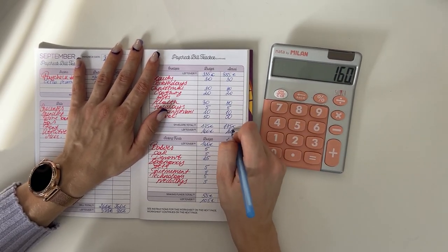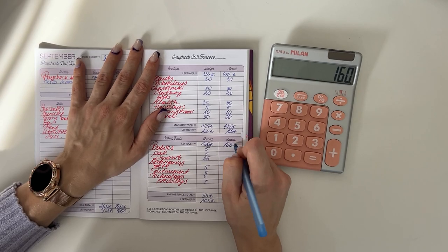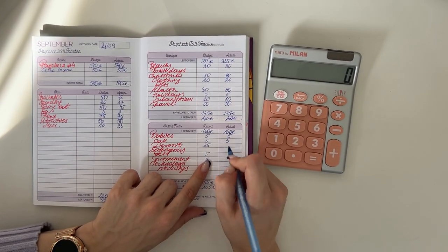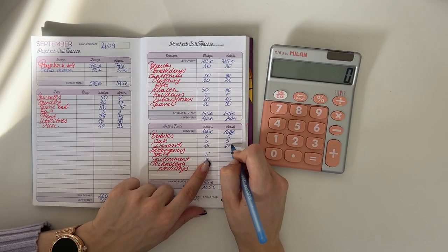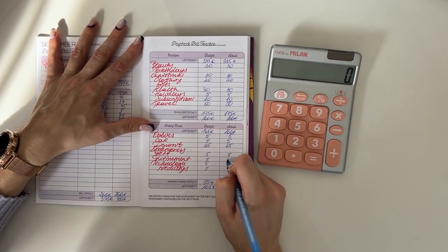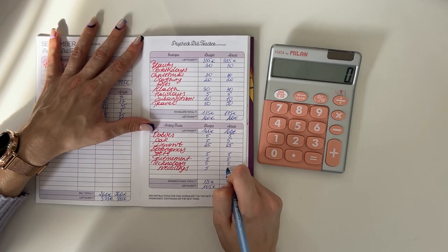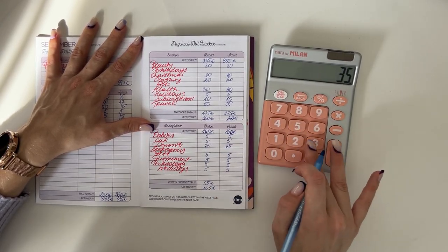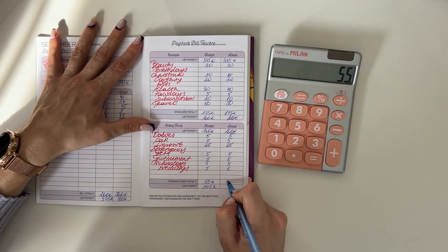So $335 minus $175 is $160. So we're bringing that down to long-term sinking funds. We put $5 into babies, $5 into car, $25 in deposit, $5 into pets, $5 in retirement, $5 in technology, and $5 in weddings. So in total that was $55.